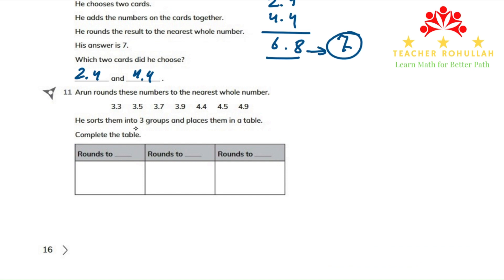He sorts them into three groups and places them in a table. The table is provided here and it's asking us to complete the table. So first let me round these numbers.